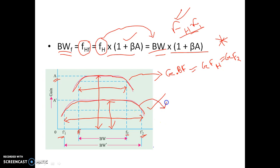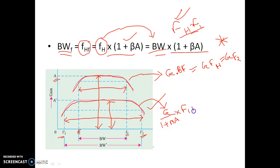Now consider the with-feedback case. Gain times bandwidth is how much? The mid-band gain is reduced by a factor G / (1 + βA). This is the gain. Bandwidth with feedback equals bandwidth without feedback times (1 + βA), which is FH × (1 + βA). Now (1 + βA) cancels, and in this case also we get gain bandwidth product as G × FH.